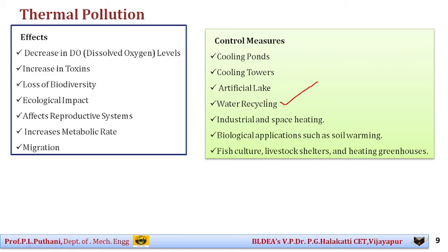Water recycling is another important concept. For example, water coming out of a washing machine could be directed towards garden plants instead of being sent directly to the sewage line — this is water reusing in the best way. Similarly, wherever possible, try to reduce toxins and recycle water so that after recycling, when it is made fully low-concentrated and toxin levels are reduced, it can be taken away for further applications such as industrial space heating.